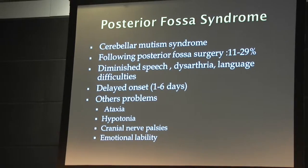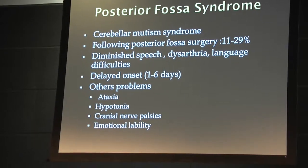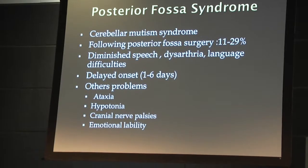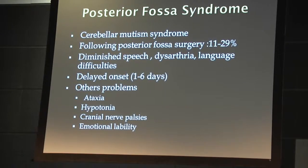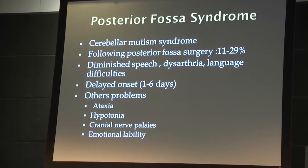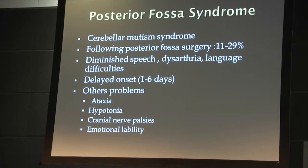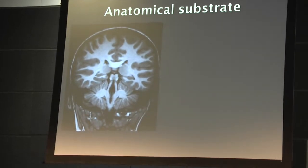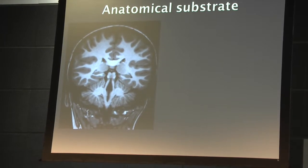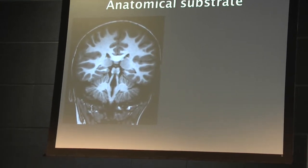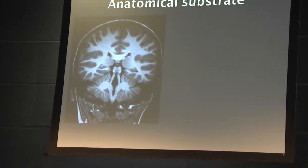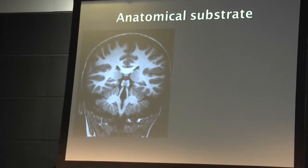In addition to the speech difficulties, we do have other neurological problems. So one can speculate that whatever the reason — the cause for this — is also a kind of a spectrum of insults that may predispose to this condition. Keeping that in mind, I just want to talk a bit about the anatomical substrate involved, which has been speculated. There is general acceptance that it is the dentatorubral pathway that is involved in the causation.